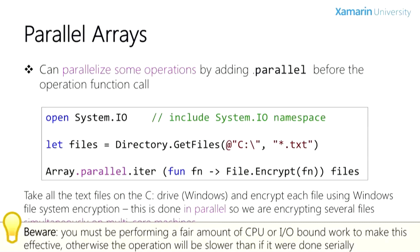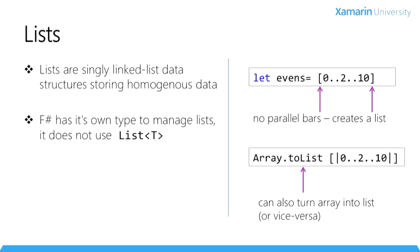Now let's examine a similar data structure: the list. Lists are similar to arrays in that they hold homogenous data, but the underlying structure is actually a linked list where each node has a single item and a pointer to the next item. Unlike arrays, F-Sharp lists are immutable — adding or removing items always results in a new list structure. F-Sharp doesn't use the traditional .NET list class; instead it uses an internal class named FSharpList, created specifically to support the immutability preferences of the language. F-Sharp provides a built-in syntax to manage lists.